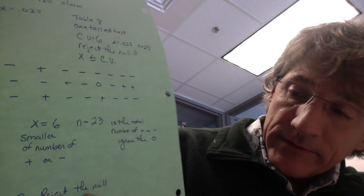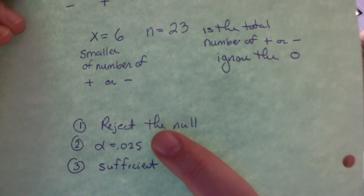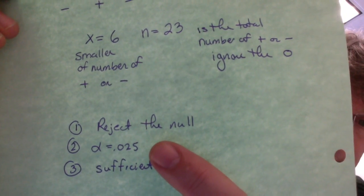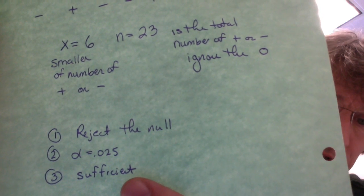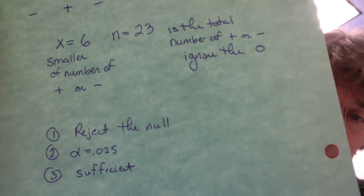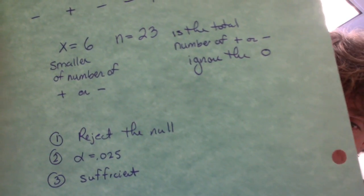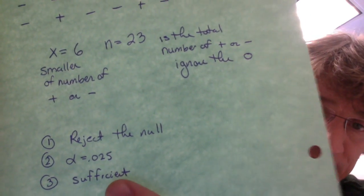So that means we're going to reject the null. Alpha is 0.025, and we would say sufficient evidence to support the claim, and then we'd restate the claim. But again, I'm not adverse to you just saying, it's sufficient if it's sufficient to support the claim, or insufficient if it's insufficient evidence to support the claim.